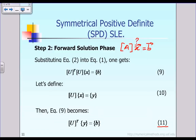According to the previous lecture, we already know that after we finish step one — the factorization phase — we have already factorized or decomposed the given matrix A in terms of the product of U-transpose times U, where U is an upper triangular matrix. That is exactly what equation 9 shows.